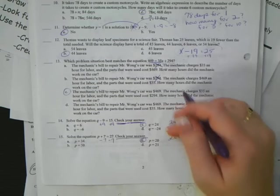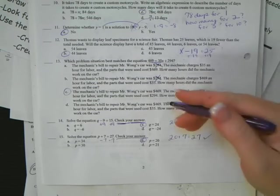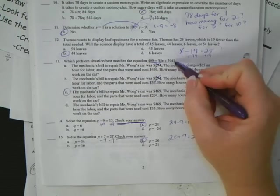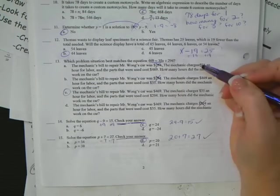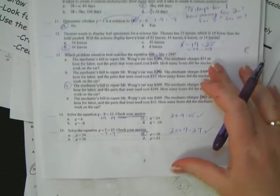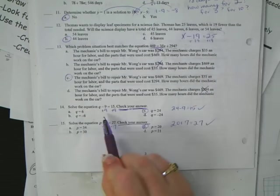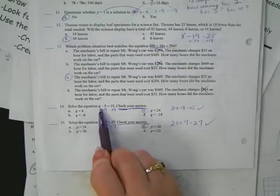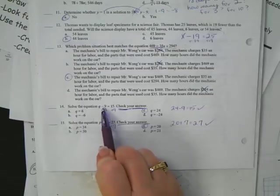P plus 7 equals 27. Subtract 7 from both sides and get 20. Plug it back in. 20 plus 7 equals 27. It's the only one that makes sense. None of these others make sense. So don't get these wrong just because you're not checking your answer. Take in a minute or two to do that.